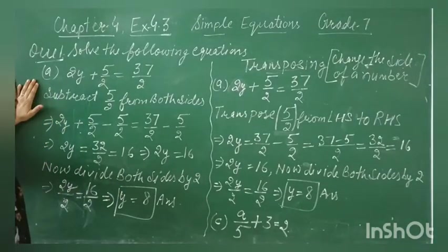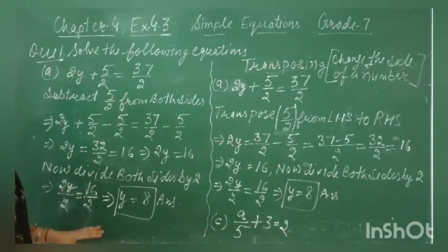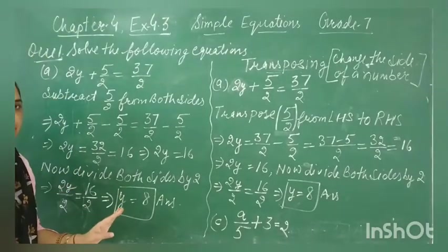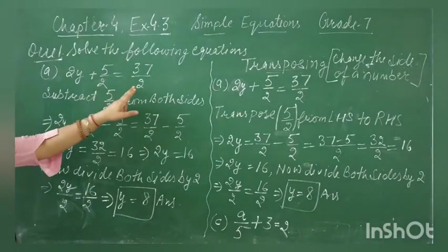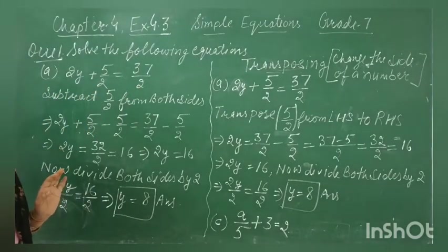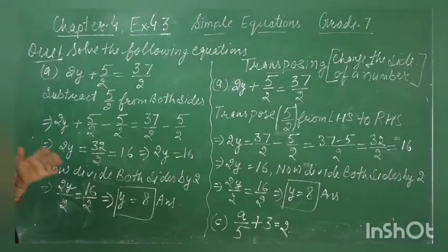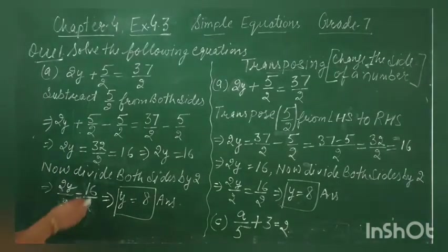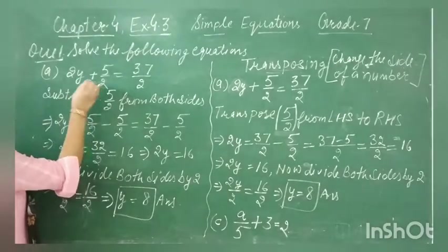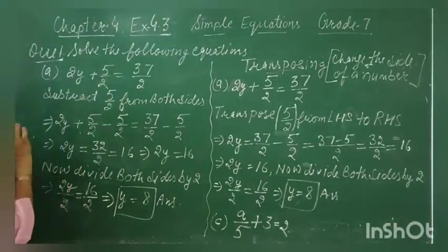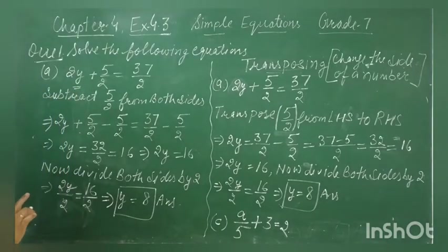Let us start with the first question. You must do all parts of the first question. The first question is: 2y plus 5 by 2 is equal to 37 by 2. We want to eliminate 5 by 2 and 2 from the left hand side so that we get the value of the variable only.